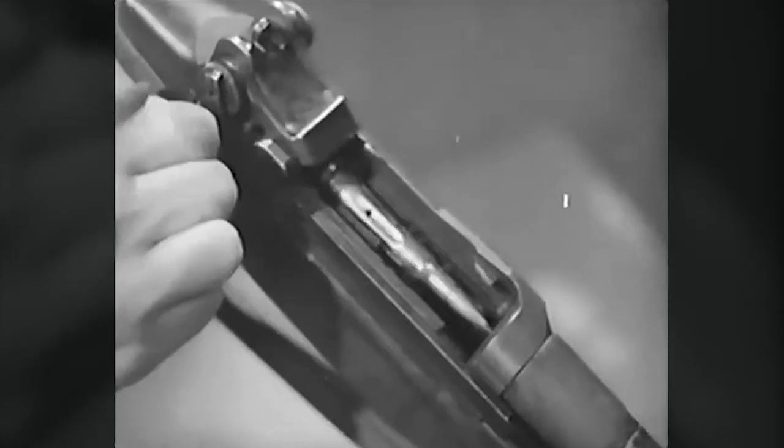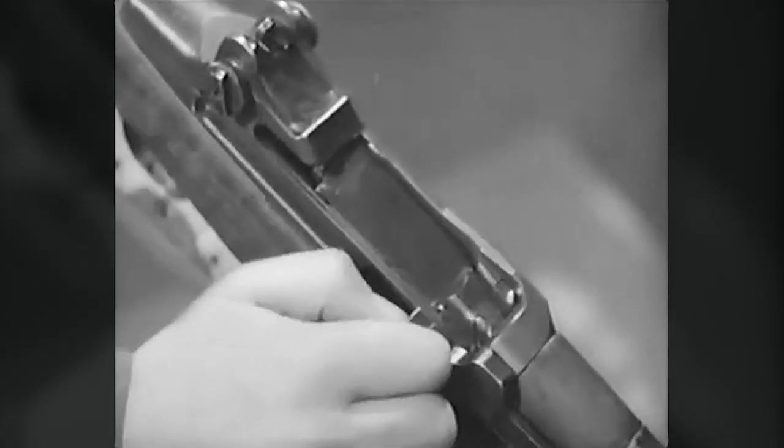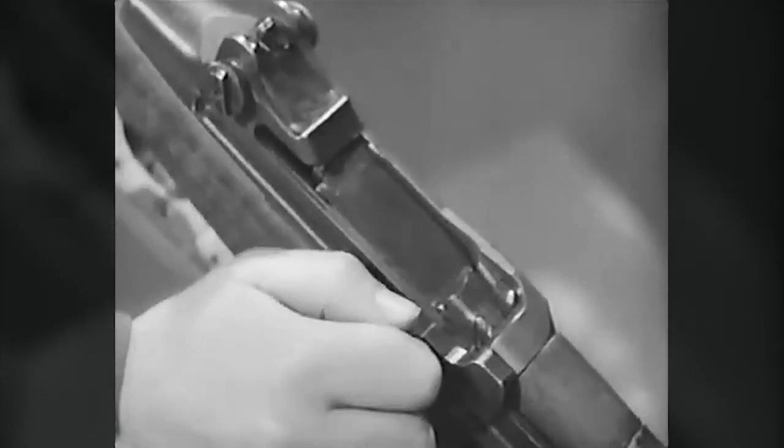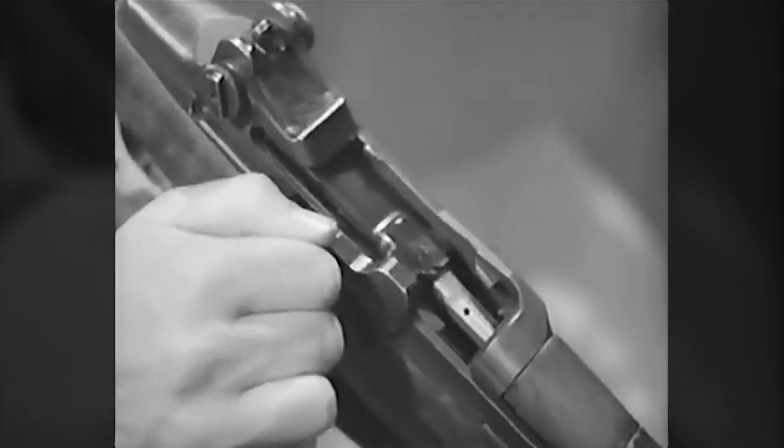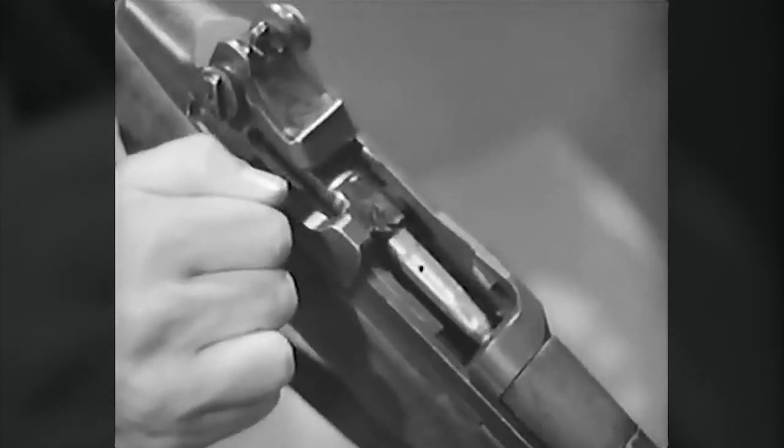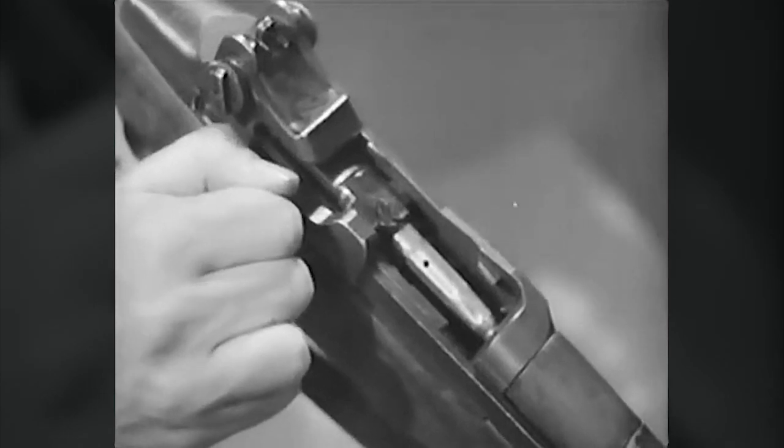As the bolt moves back, the extractor withdraws the empty cartridge case. As the neck of the case clears the breech, the ejector jumps forward, pushed by its spring. The case pivots about the extractor and up and out of the receiver.